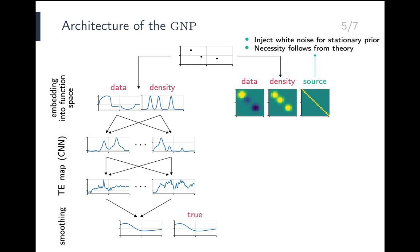To build some intuition for the source channel, note that the covariance matrix of white noise is exactly the identity matrix. Therefore, the source channel injects white noise into the architecture. Intuitively, the architecture uses this white noise to generate a stationary prior, which will then be modulated by introducing correlations inferred from the context set to produce the right predictive covariance. The necessity of the source channel is dictated by the universal representation theorem for kernel maps in the paper.